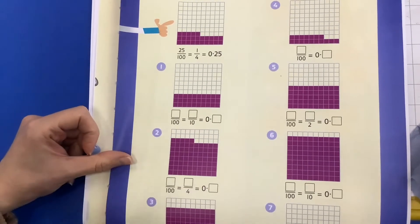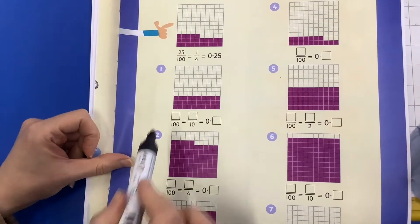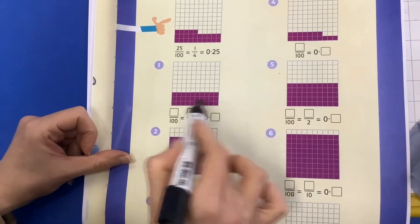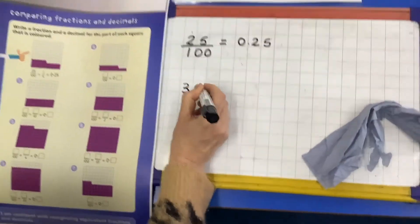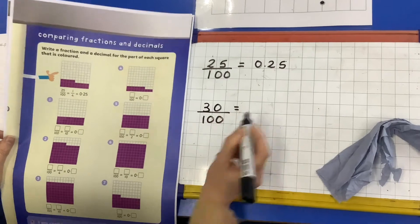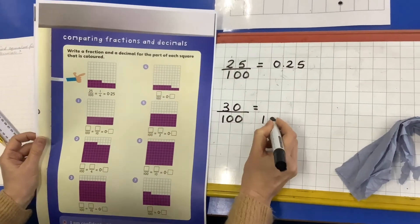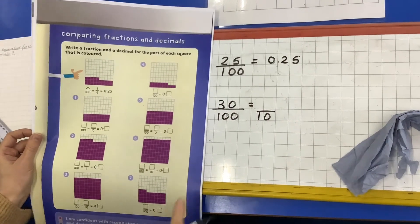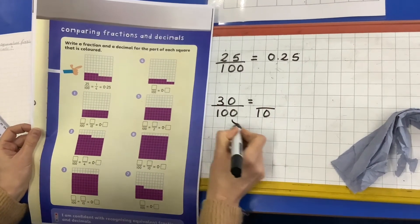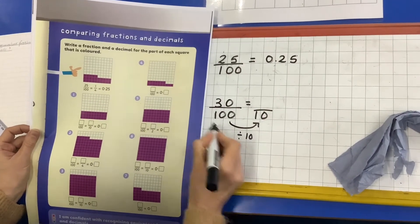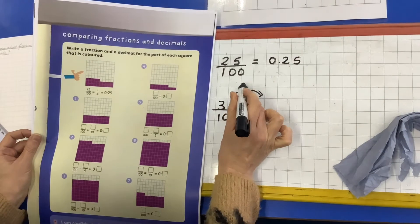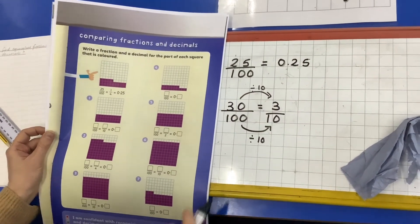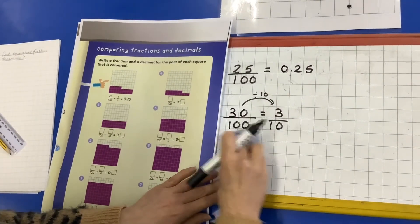How many out of 100 here are shaded? Hopefully you can see that there's 3 tenths, 3 lots of 10, 30 out of 100. I could do that as tenths, couldn't I? That would be an equivalent fraction. If I do the same to the top and the bottom, I've divided the denominator by 10, so I also need to divide the numerator by 10. So I've got 3 tenths. The 30 out of 100 is the same as 3 tenths.